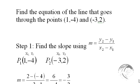Finding the equation of the line that goes through the points (1, -4) and (-3, 2). We have two given points and there's a unique line that goes through these two points. We're going to find the equation of that line.